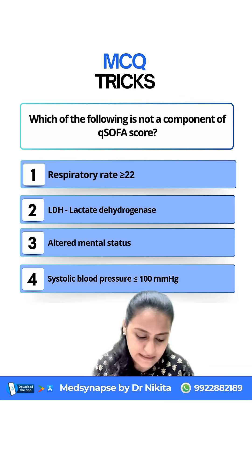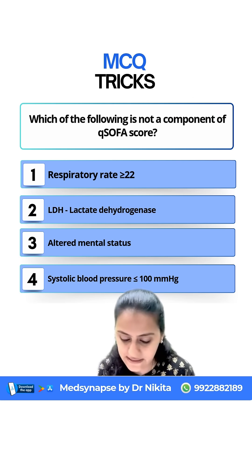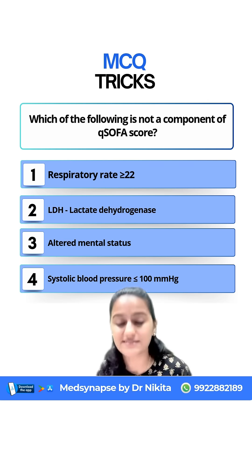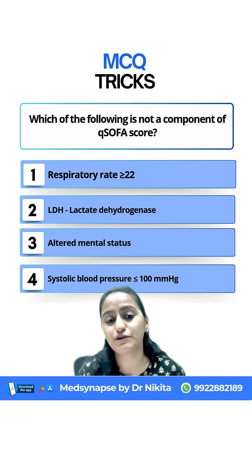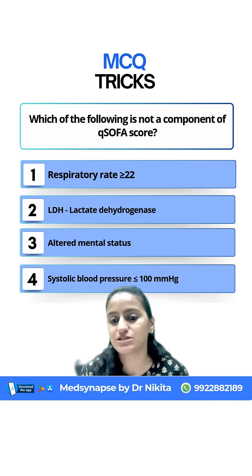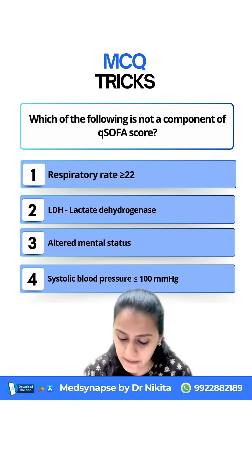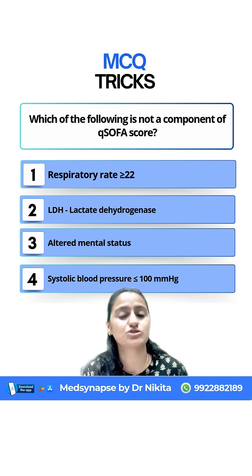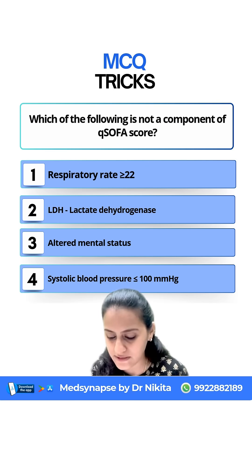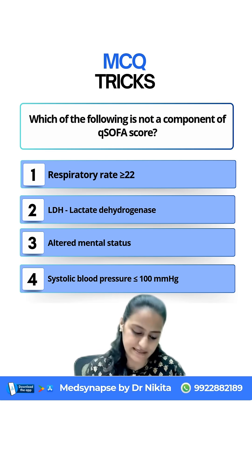So remember: qSOFA has Respiratory Rate, Altered Mental Status (GCS affected), and Systolic Blood Pressure. It does NOT have LDH. So what is not a component of qSOFA? LDH is not a component. Both qSOFA and the Revised Trauma Score share the same components — Respiratory Rate, GCS, and Systolic Blood Pressure.